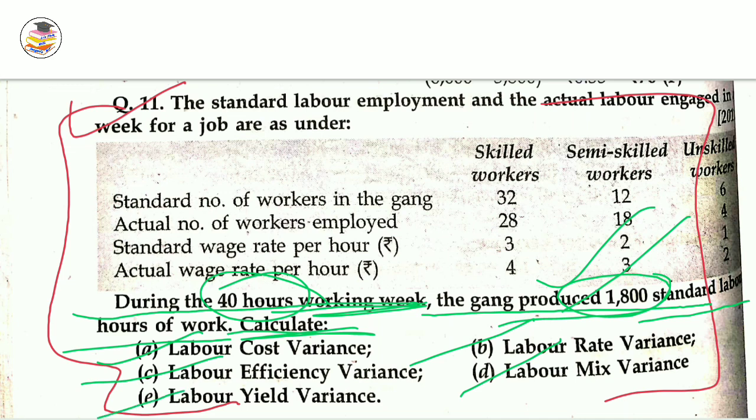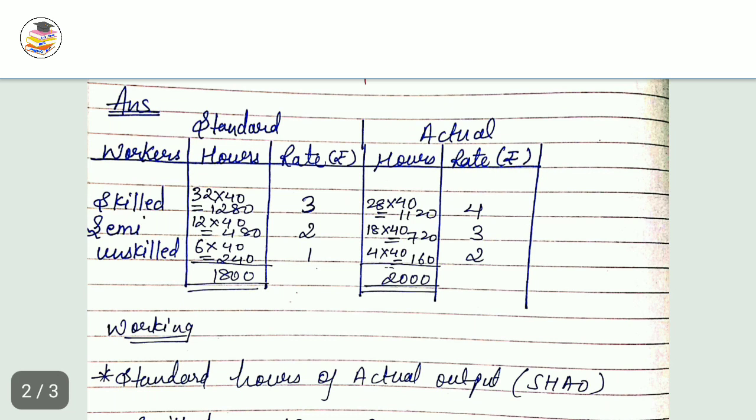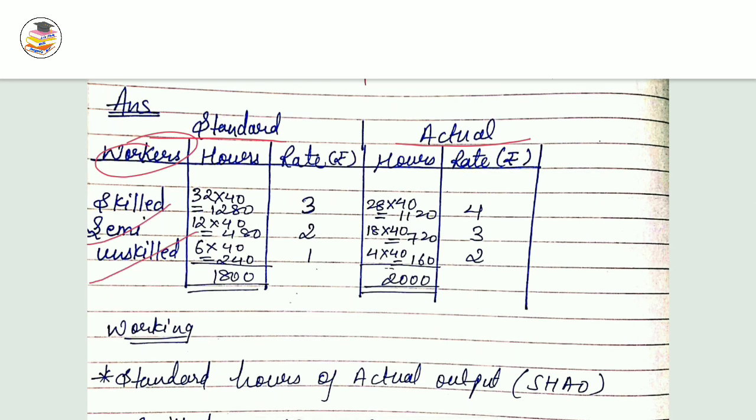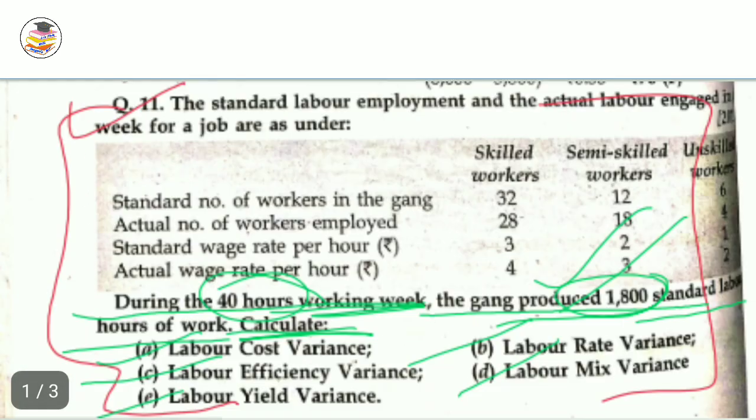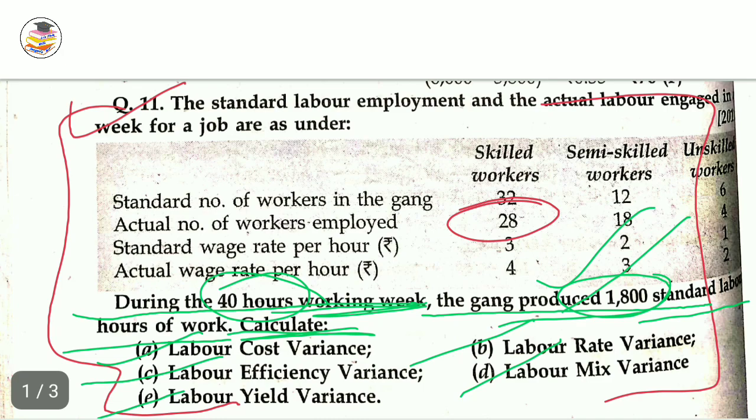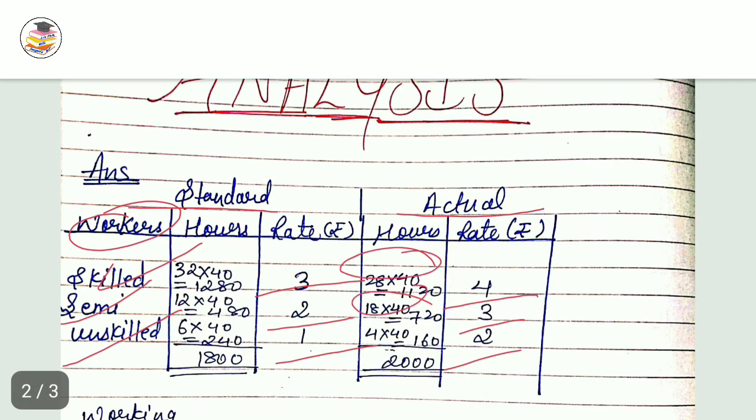For this question, most importantly, you need to prepare the table. The table has standard and actual columns. Write workers: skilled, semi-skilled, and unskilled. Then write the rate. Actual hours: actual workers are 28, so 28 into 40 equals 1,120 hours. 18 into 40 equals 720 hours. 4 into 40 equals 160 hours. Total is 2,000 hours of work they have done.